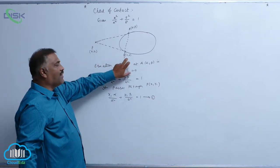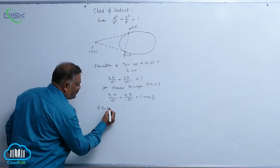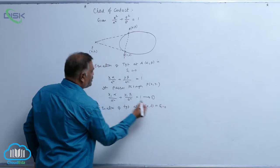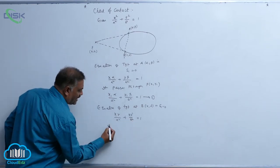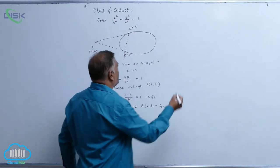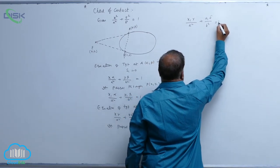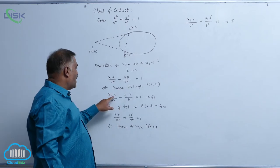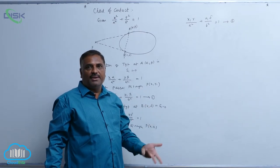In the same fashion, we find the equation of tangent at point B(γ, δ), again using S1 = 0: xγ / a² + yδ / b² = 1. Since it also passes through P(x1, y1): x1·γ / a² + y1·δ / b² = 1. Call this equation 2. Observing equations 1 and 2, α, β are replaced by γ, δ, meaning these are variable coordinates.